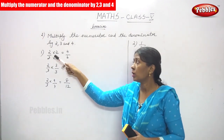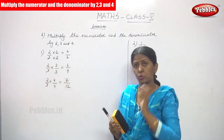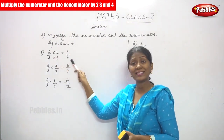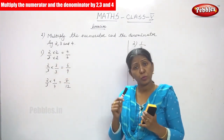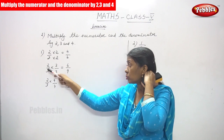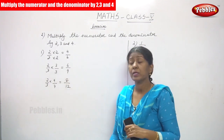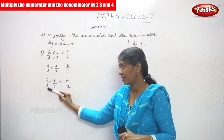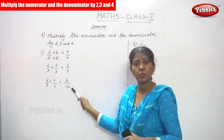So 2 by 3 into 2 — multiply the numerator and the denominator by 2. So 2 into 2 you get 4, and 3 into 2 you get 6. Next, 2 by 3 is multiplied by 3 — both numerator and denominator are multiplied by 3, so 2 into 3 gives 6 and 3 into 3 gives 9. Next, 2 by 3 is multiplied by 4 — numerator multiplied by 4 and denominator multiplied by 4. That is the rule. So 2 into 4 gives 8 and 3 into 4 gives 12.